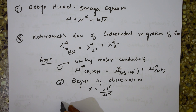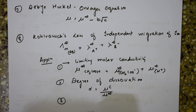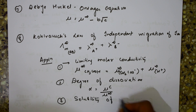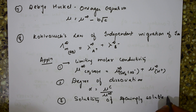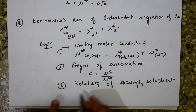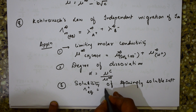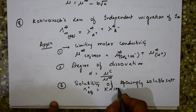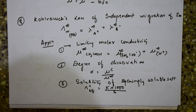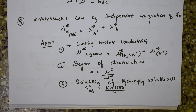Another application is calculating the solubility of a sparingly soluble salt. The formula is: μ_infinity = κ × 1000 / S, where S is the solubility. This is important for your exam.